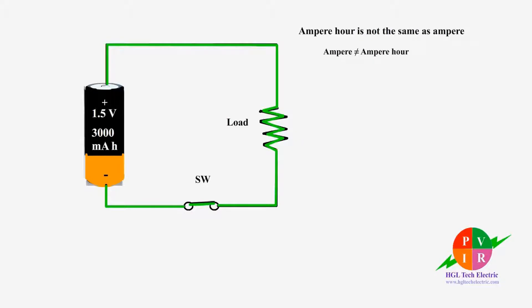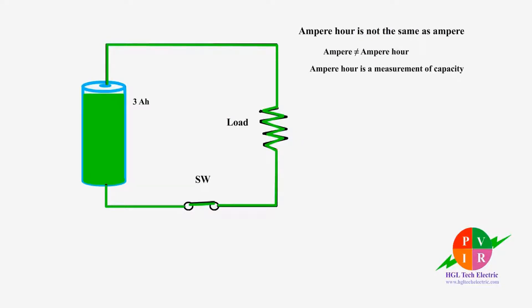Now we are going to talk about ampere and ampere hours. Amps and amp hours are not the same. Amp hours is a measure of capacity. For example, this battery can supply power for 1 hour if the load requires 3 amps, for half an hour if the load requires 6 amps, and for 2 hours if the load requires 1.5 amps.